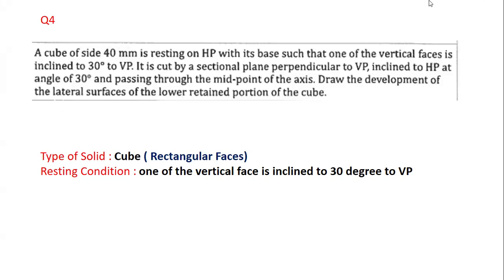This question is also chosen from our VTO model question paper. The question is: a cube of side 40 mm is resting on HP with its base such that one of the vertical faces is inclined at 30 degrees to VP. It is cut by a sectional plane perpendicular to VP, inclined to HP at an angle of 30 degrees and passing through the midpoint of the axis. Draw the development of the lateral surface of the lower retained portion of the cube.